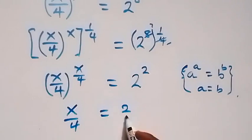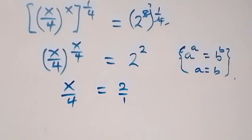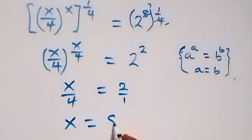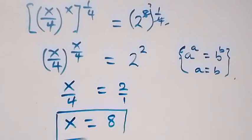Which is 2 over 1. Then cross multiply: we have x times 1, that's x, and 4 times 2, that's 8. So we have x equals to 8 from here.